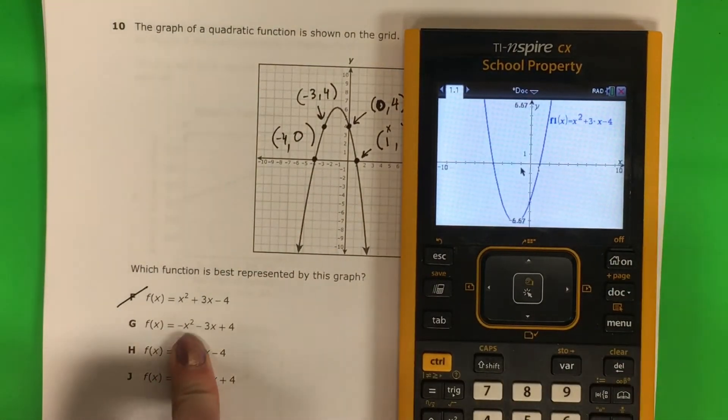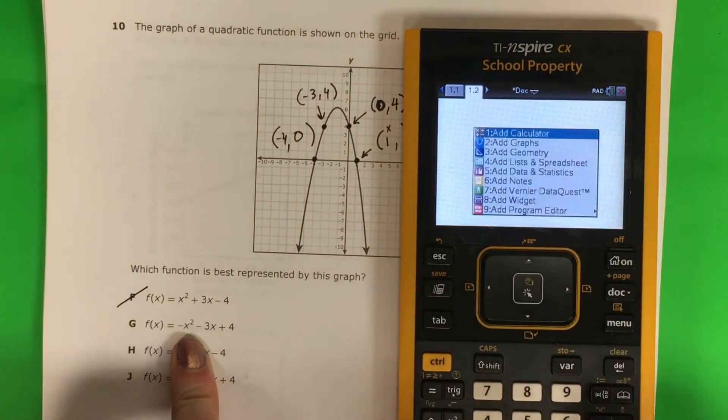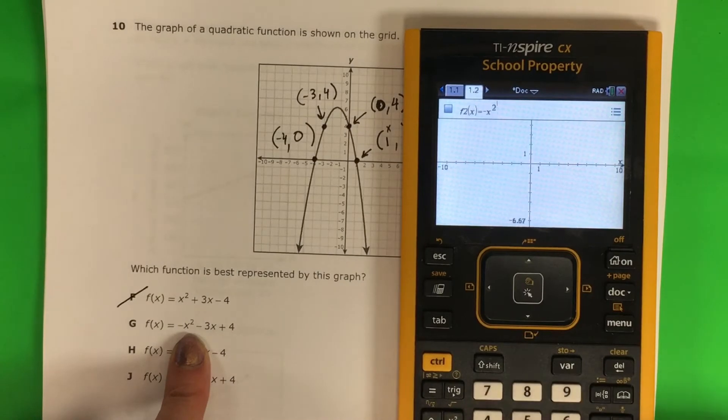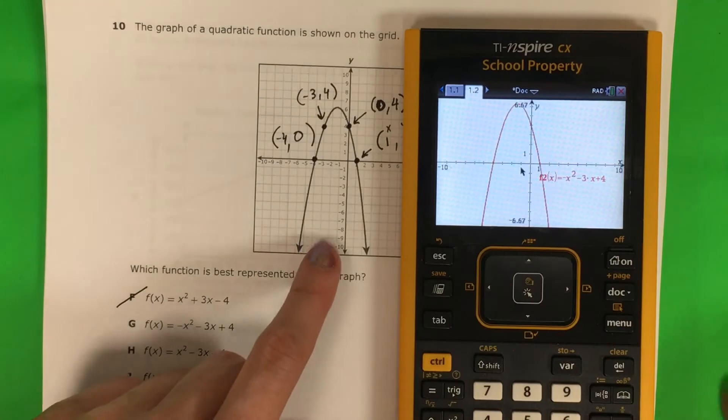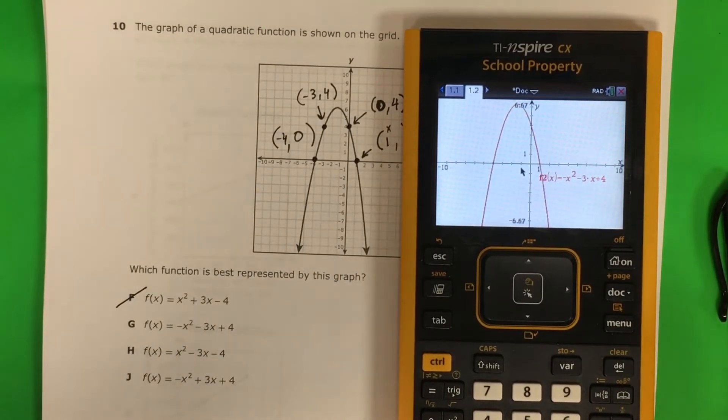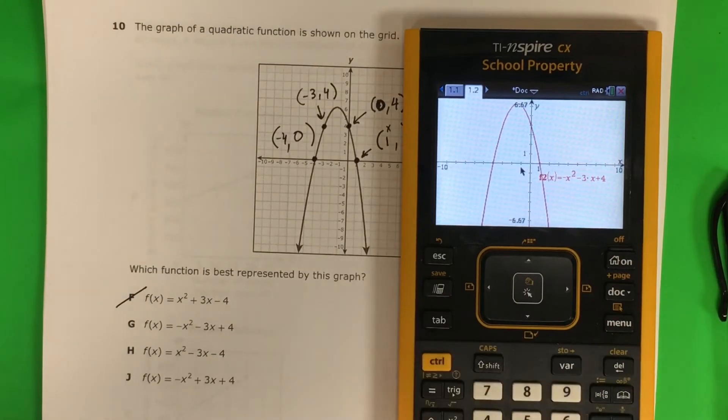Let's try G, OK? So ctrl, doc, 2. Let's go ahead and try that one. Negative x squared minus 3x plus 4, enter. OK, that looks similar. Let's check the points. You always check the points. So go to the table, ctrl, t.